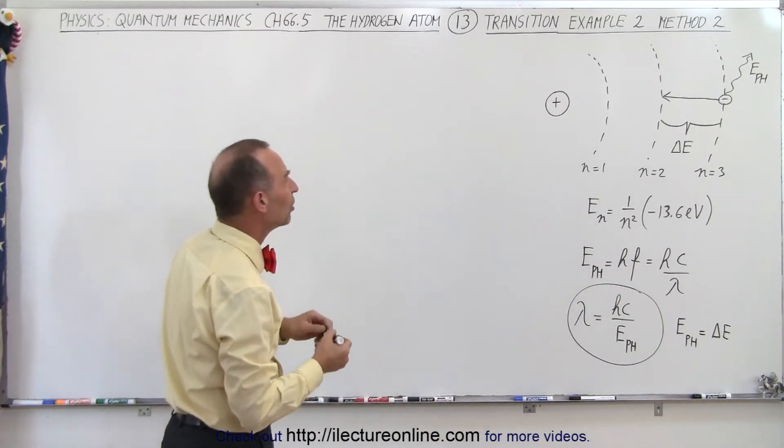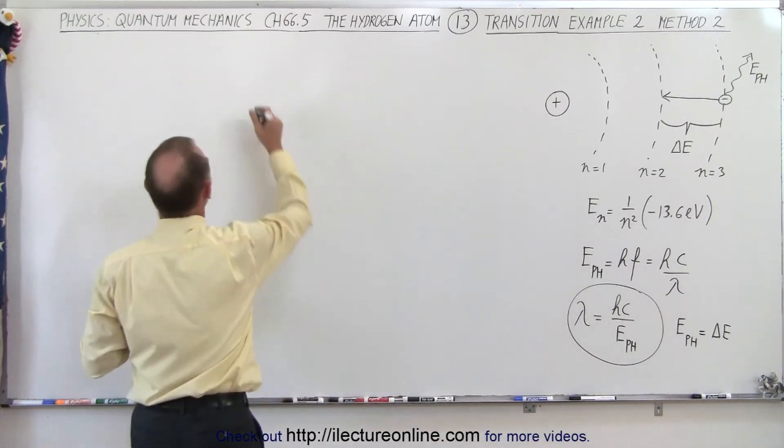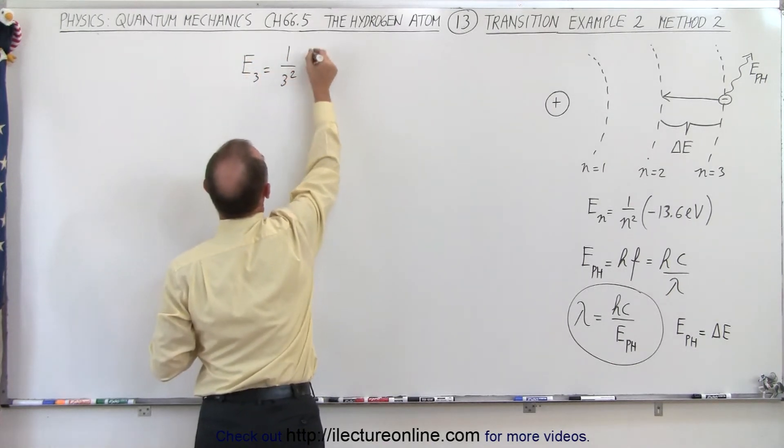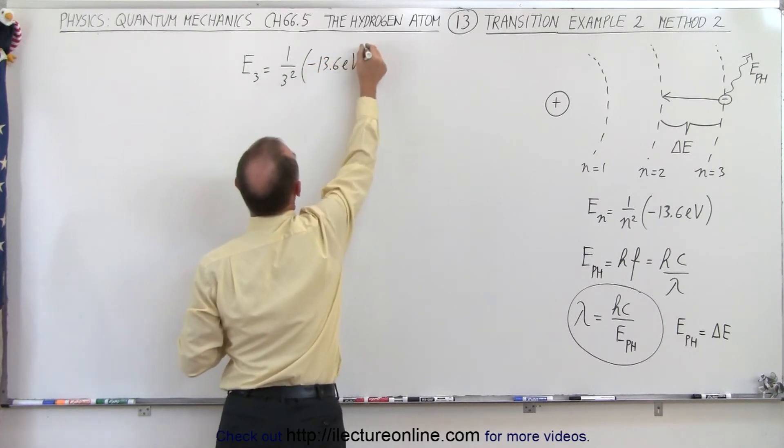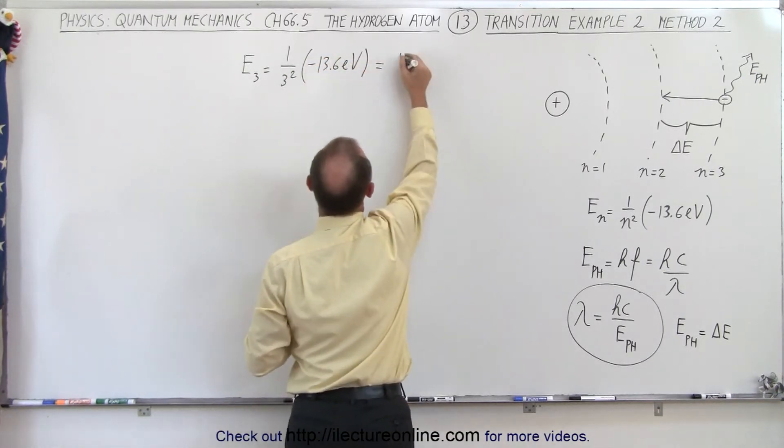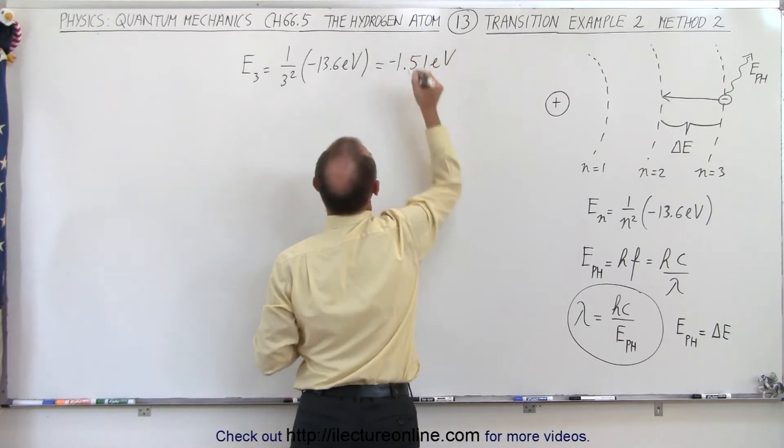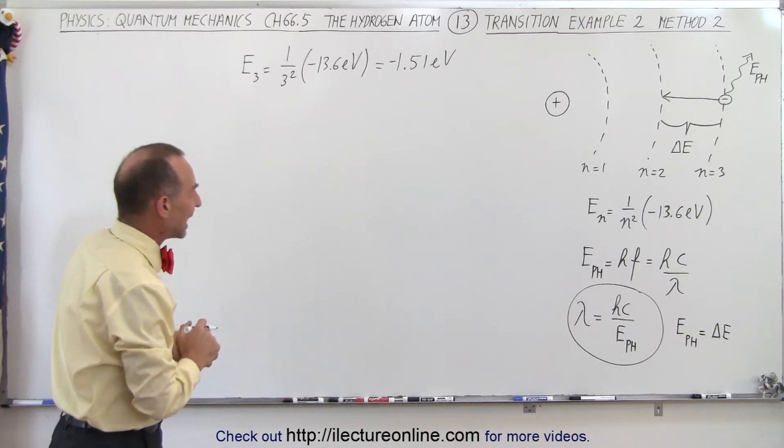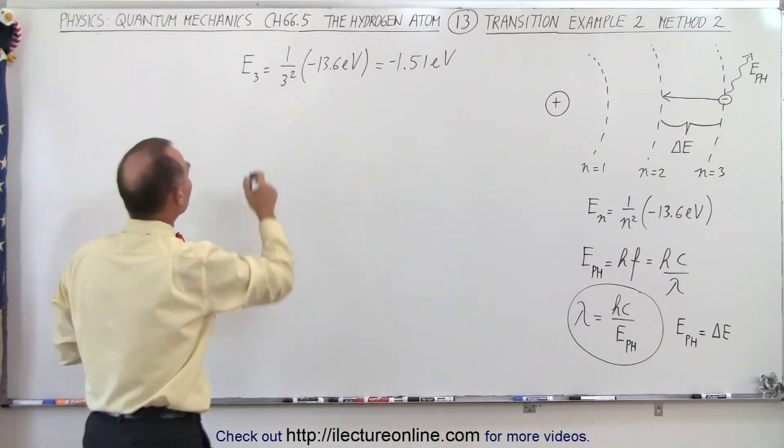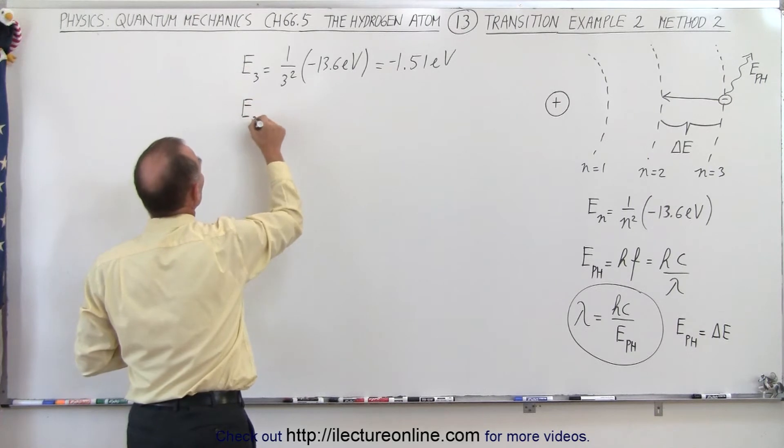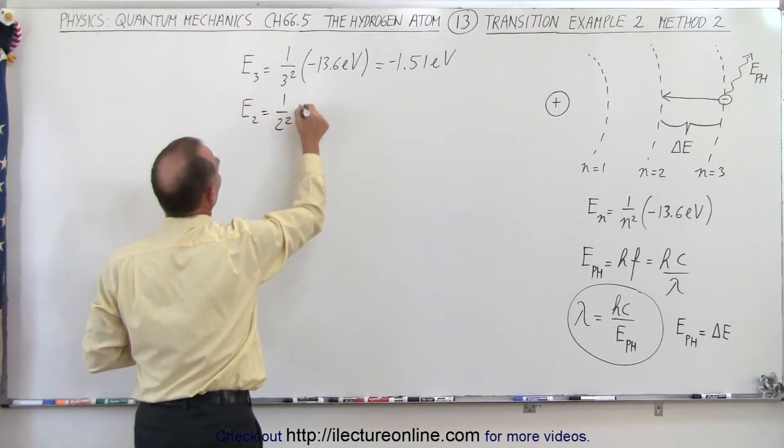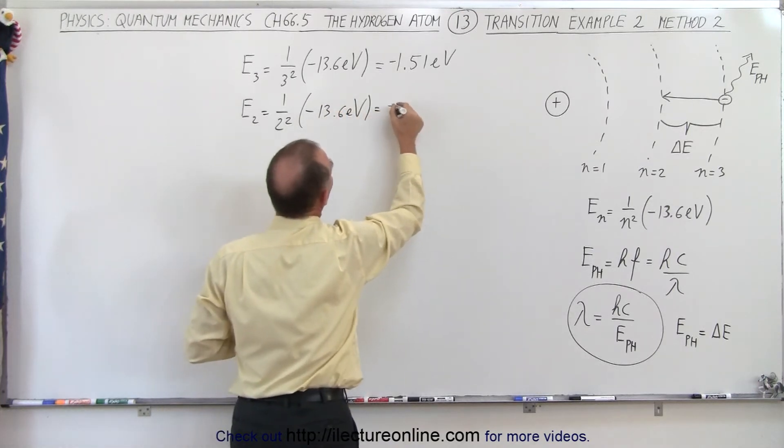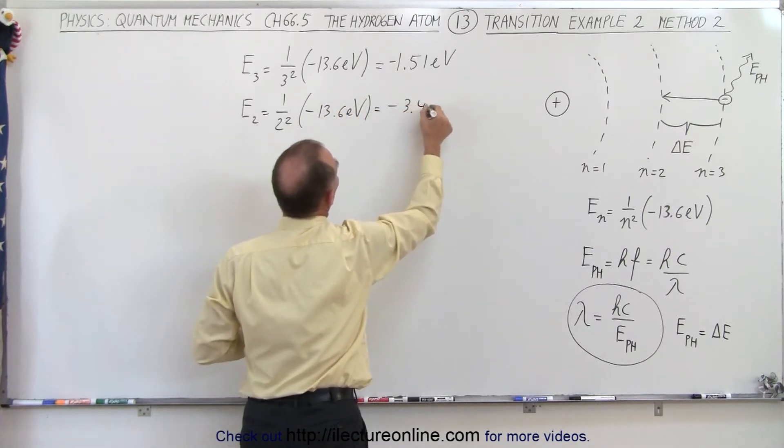So let's first calculate the energy of the two levels. Energy of the third level is equal to 1 over 3 squared times minus 13.6 electron volts, which makes it equal to minus 1.51 electron volts. It's a negative potential well. And E sub 2 is equal to 1 over 2 squared times minus 13.6 electron volts, which is equal to minus 3.4 electron volts.